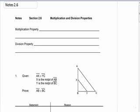Properties for multiplication and division, which is handy because it follows the day that we learn subtraction and addition. Please write down the following multiplication property: if segments or angles are congruent, then their like multiples are congruent.